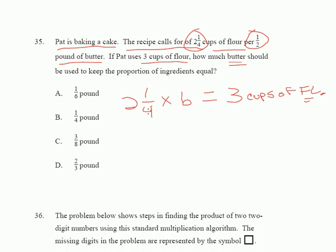Here's how I would do it: change the mixed number into an improper fraction. So that's four times two plus one, that's four times two plus one, gives you a nine over four times B, which is equal to three cups of flour. We have to get B by itself.